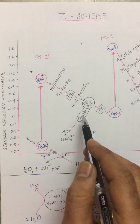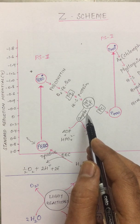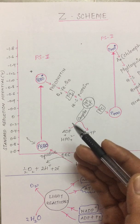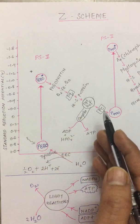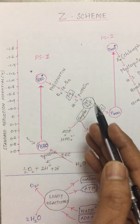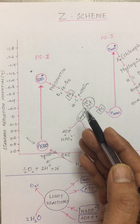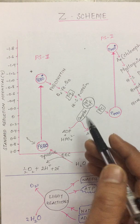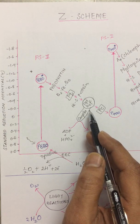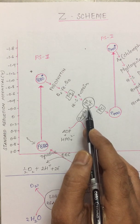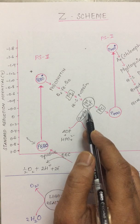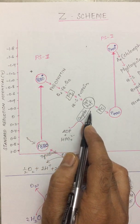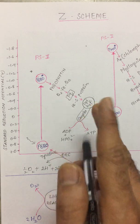The cytochrome B6F complex is an electrogenic proton pump — it can pump protons in the presence of electrons. As electrons are transferred, the energy generated is utilized for pumping protons across a membrane. For every one electron passing through this complex, it can pump two protons.